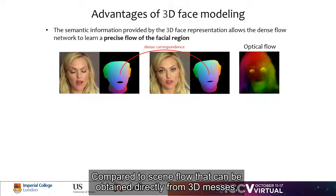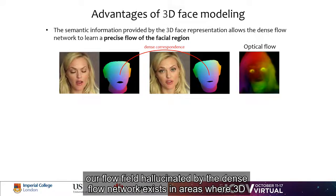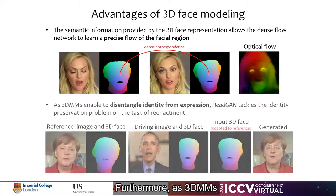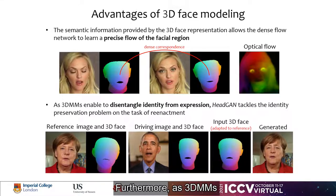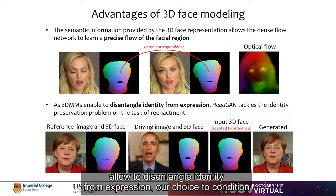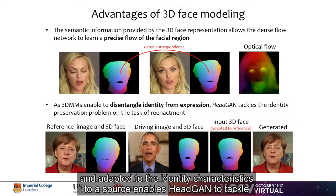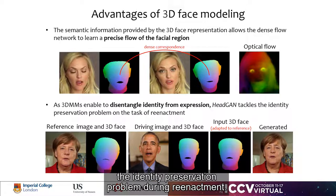Compared to scene flow that can be obtained directly from 3D meshes, our flow field hallucinated by the dense flow network exists in areas where 3D representation is missing, such as hair and upper body. Furthermore, as 3D morphable models allow us to disentangle identity from expression, our choice to condition the rendering network on the 3D face extracted from the driving person and adapted to the identity characteristics of the source enables HeadGun to tackle the identity preservation problem during reenactment.